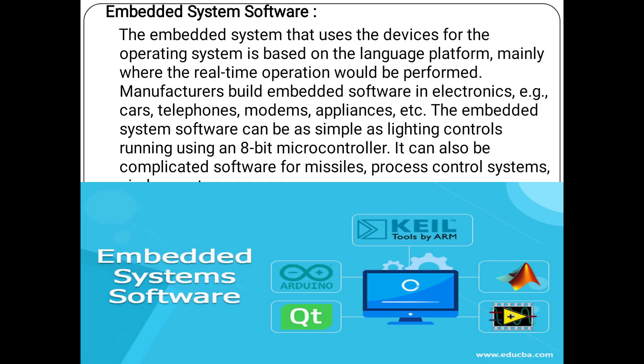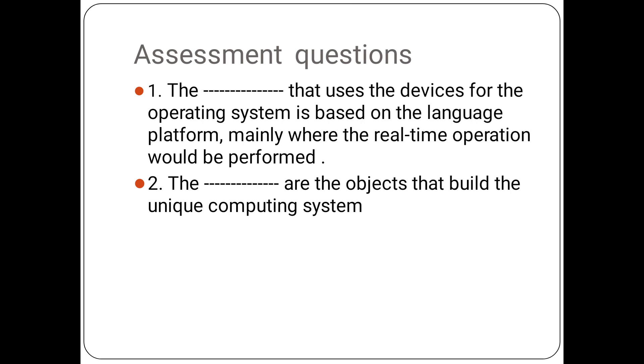If you look at the embedded system hardware, the embedded system uses the device with an operating system based on the language platform, mainly where real-time operations would be performed. The manufacturer builds embedded software into electronics, cars, telephones, modems, appliances, and more. The embedded system software can be as simple as lighting control running on an 8-bit microcontroller, or it can be complicated software for a web browser and microbrowser.